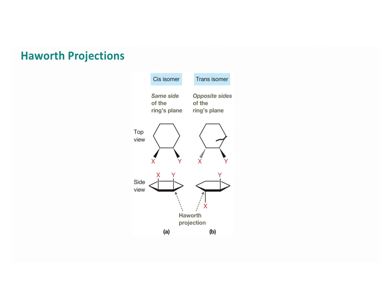This is an example of a Haworth projection. The ring is depicted as being planar, where this darkened part is coming out towards you. If both substituents are coming up, they are cis — they're cis to each other. If one is above the plane of the ring and one is below the plane of the ring, that is trans. It's also convenient to show this using dashes and wedges instead of drawing the Haworth projection every time.